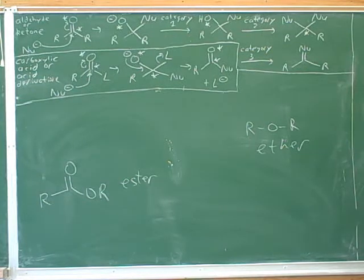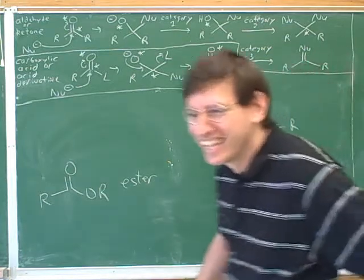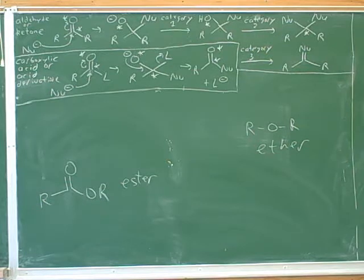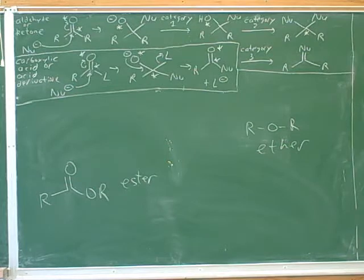Ether the bat — that's how I draw it. So ether looks like a bat because usually it looks like a bat shape. Why couldn't you say ester the bat? Because ester doesn't look like a bat — it has a little carbonyl group, it doesn't have wings like this.